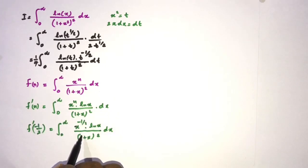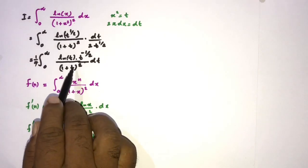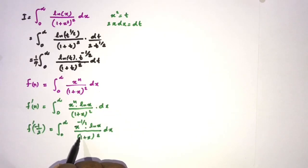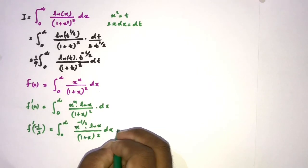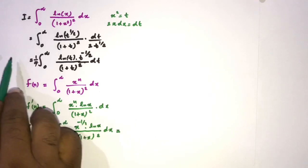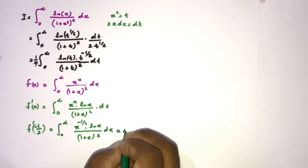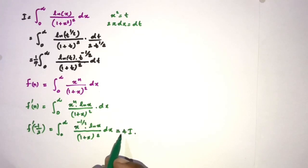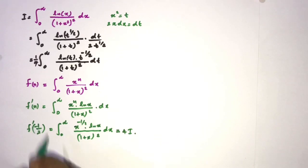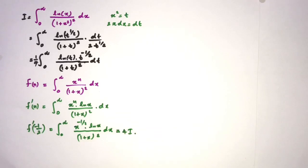This is the same integral we obtained earlier, so we can write that it equals 4 times I. Therefore, to evaluate I, we need to evaluate f'(−1/2).